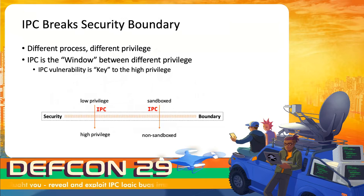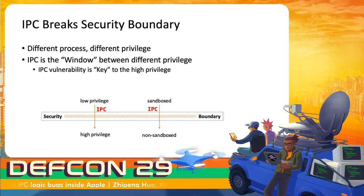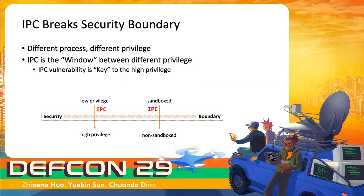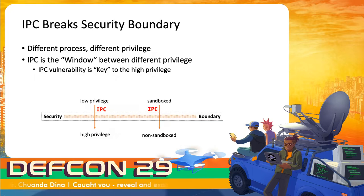IPC divides the entire system into separated processes with different privileges — some low privilege, some high privilege, some sandboxed, some non-sandboxed. There is a security boundary between them and IPC may break it. IPC is a bridge between different processes, so it is also a window between different privilege levels. IPC vulnerability is a key to high privilege and one of the most valuable targets for privilege escalation.